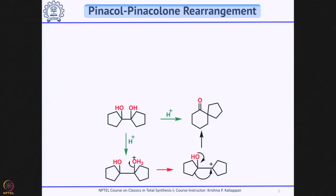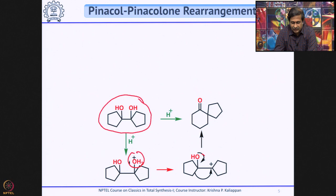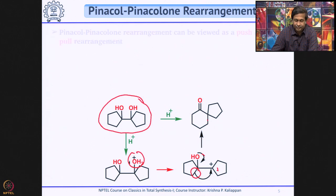The migration takes place because of the stability conferred by the lone pair on the oxygen, facilitating the pinacol-pinacolon rearrangement. For example, when you have a diol like this, protonation takes place followed by loss of water to generate a carbocation. The lone pair pushes the C-C bond — in a symmetrical case, ring enlargement takes place, giving a spiro 4,5 system.